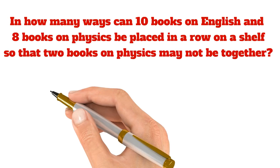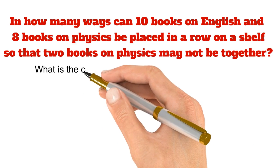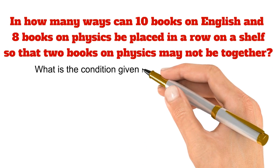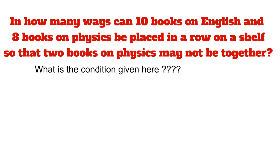What is the condition given here? The thing I have told in every video is that you have to satisfy the condition first. So the condition here is they have given you 10 English books and 8 physics books and you should not place 2 physics books together.